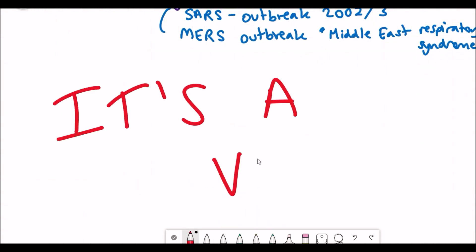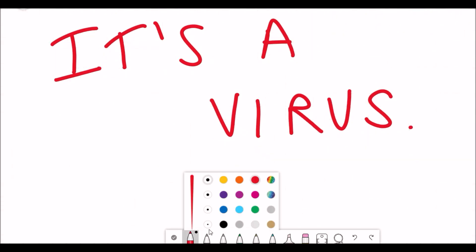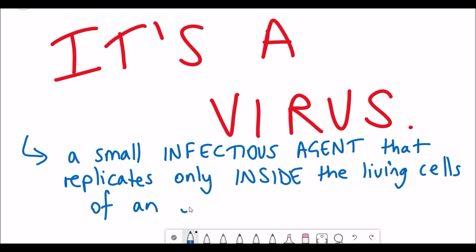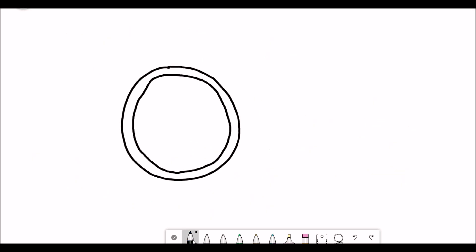So as I mentioned, coronavirus, well, it is a virus. So what actually is a virus? Well, it's a small infectious agent that replicates only inside a host cell. So for example, human cells, bacterial cells, that's the only way it can replicate.